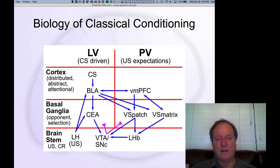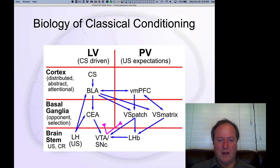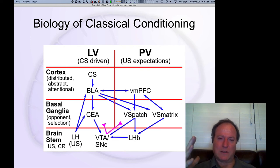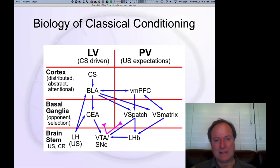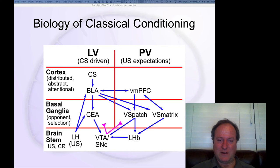There are simple equations that describe how classical conditioning works. One of the most famous is the Rescorla-Wagner learning rule. But if you look beyond that high-level mathematical description, it turns out there is a lot of really complicated neural circuitry underlying classical conditioning. This area involves a bit more detail than typically covered for this material.